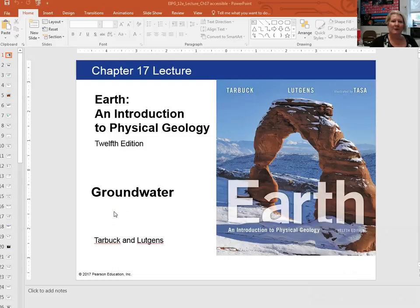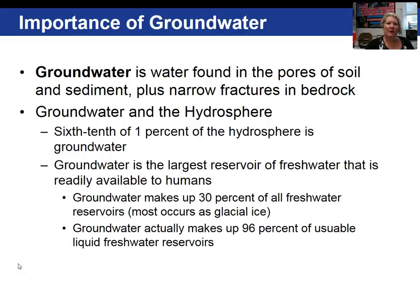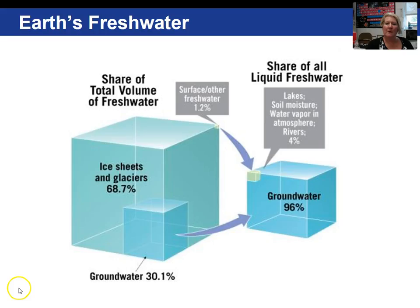Future geologists, this is our last chapter we're going to cover this semester and it is on groundwater. Groundwater is the water found in the pores of soil and sediment and in fractures of bedrock. The important thing about groundwater is that it is the largest reservoir of usable fresh water. Most of our fresh water is locked up in glaciers and ice sheets. Groundwater is usable in the sense that it is accessible, whereas ice is not, and it makes up 30% of fresh water.